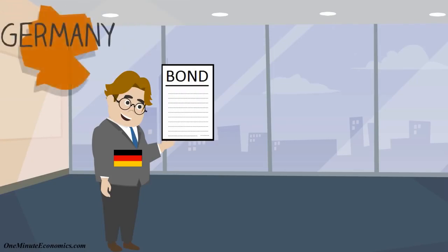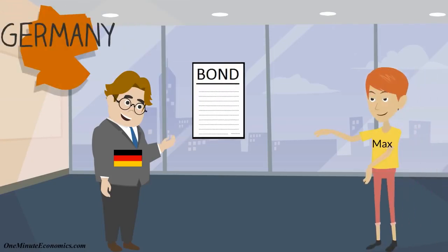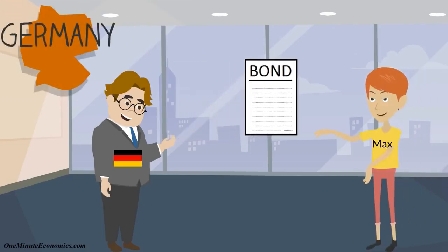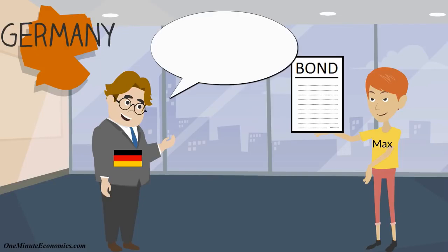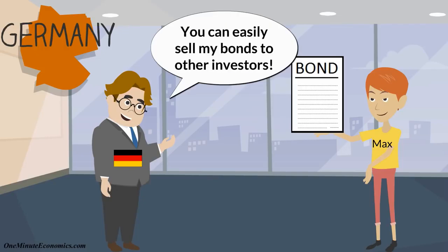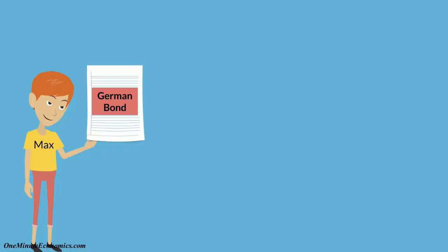If Max would have, for example, bought German bonds with those $15,000 instead, he could have simply sold them to another investor to get the short-term capital he needed.